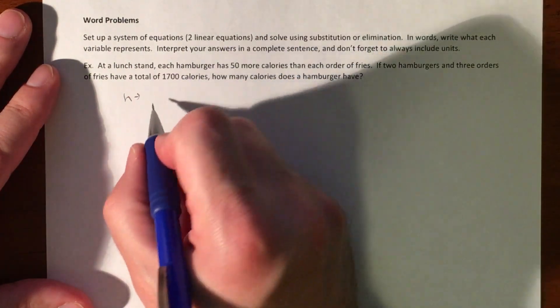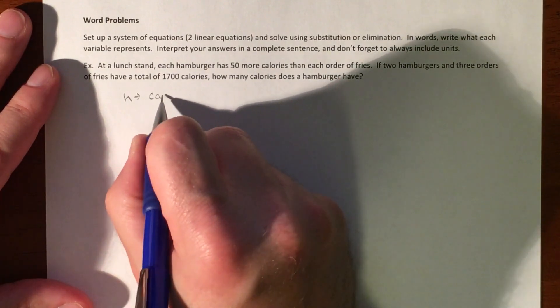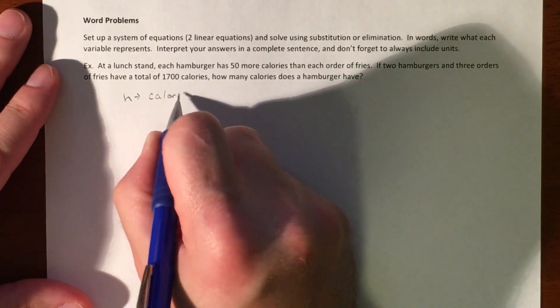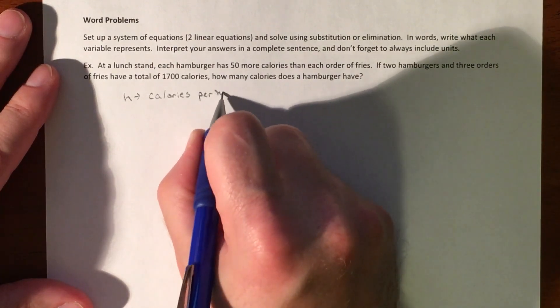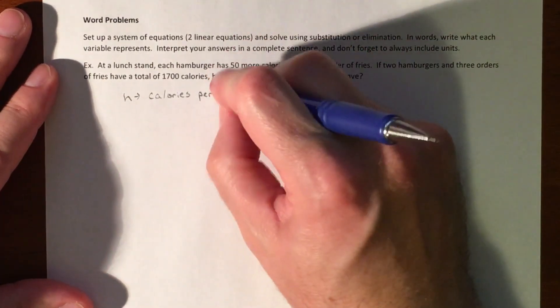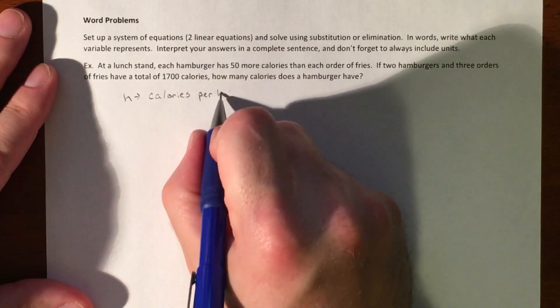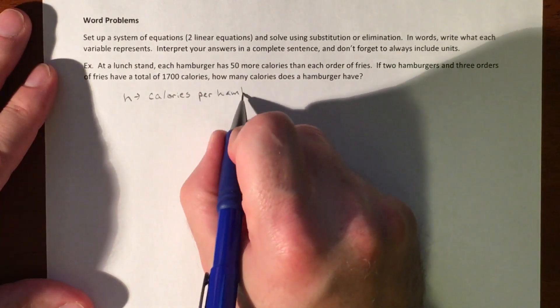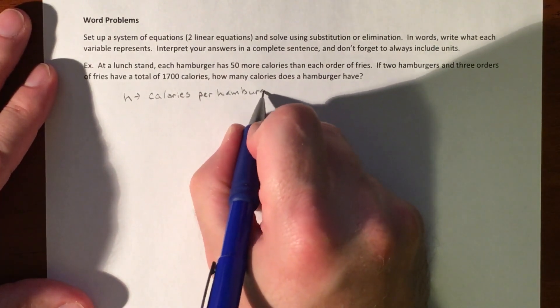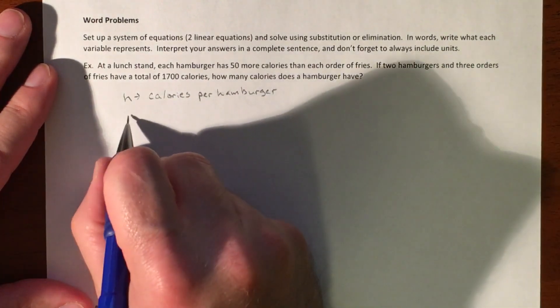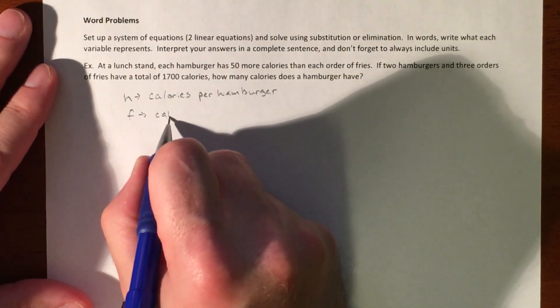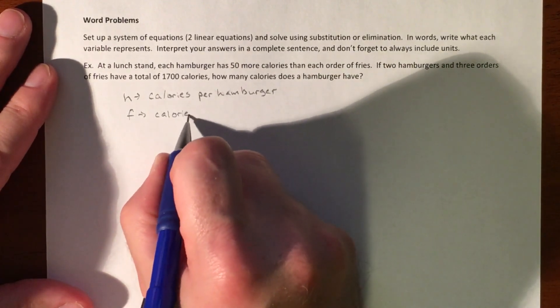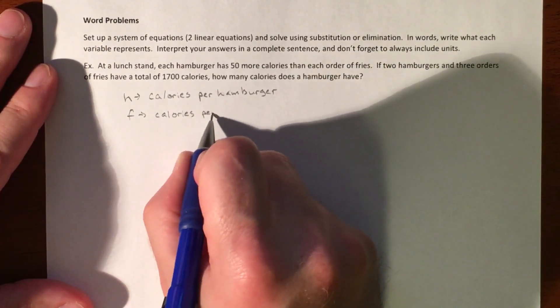So our H is going to be our calories per hamburger, and then that makes FR calories per fry.